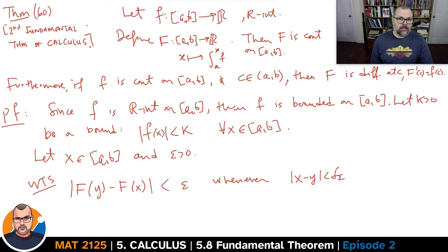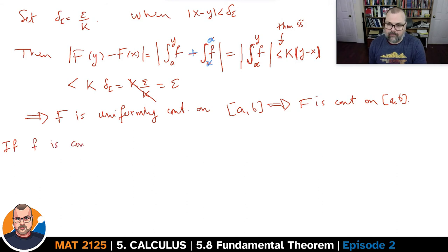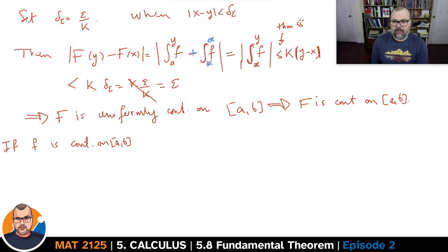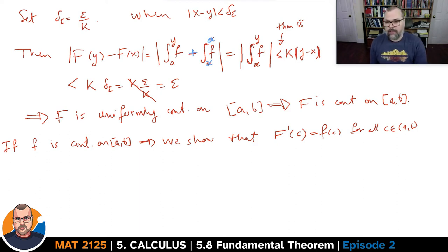Now if we further assume that little f is continuous, then it turns out that big F is in fact differentiable and F'(c) will equal little f(c). I remind you that is not always going to be the case — it requires continuity of little f. If little f is continuous on [a, b], then we show that F'(c) equals little f(c) for all c in the interval. To show differentiability, we use the definition. Let epsilon be greater than zero.